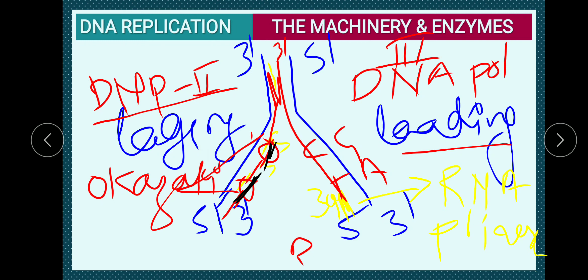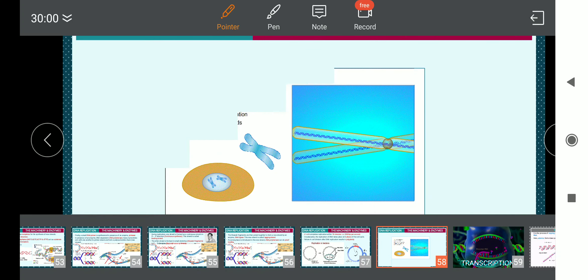The lagging strand is synthesized in the overall 5' to 3' direction. In one strand where continuous synthesis of DNA takes place, it is called the leading strand; the other strand where discontinuous synthesis occurs is called the lagging strand. The new strand is synthesized by DNA polymerase 3. DNA polymerase 2 removes primers and fills gaps, and DNA ligase joins the fragments. The short stretches on the lagging strand are called Okazaki fragments.